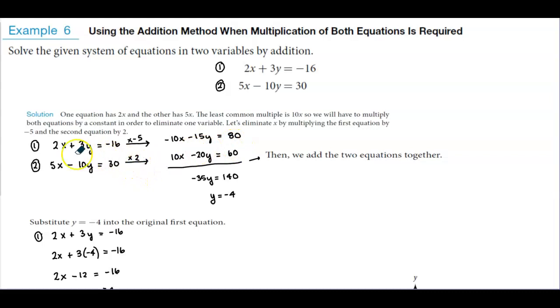Now we're going to multiply each term in equation 2 by 2. So 2 times 5x is 10x, 2 times negative 10y is minus 20y, and 2 times 30 is 60.